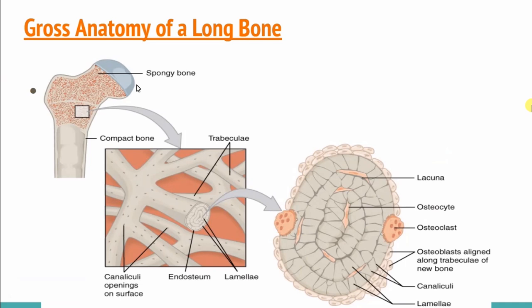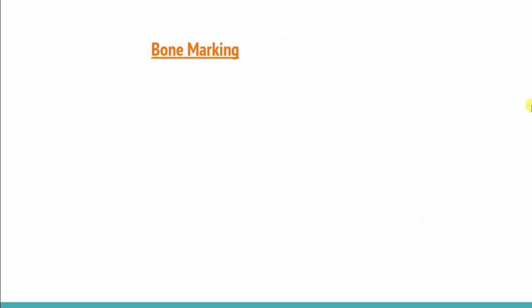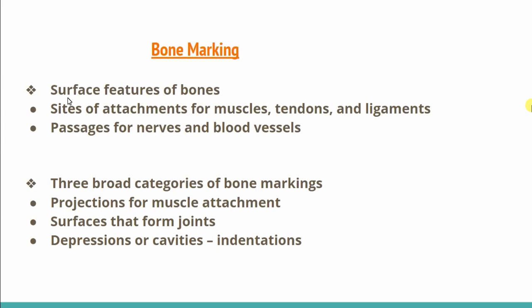Now, what bone markings are present? We have to study some markings about it — the surface features of the bone that we know from the outside. Their role includes being a site of attachment for muscles, tendons, and ligaments. There will also be structures for ligaments, and nerves and blood vessels will have locations too. We call these by particular names, and we divide them into three broad categories.